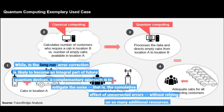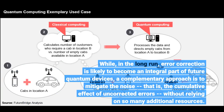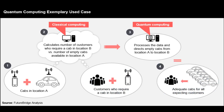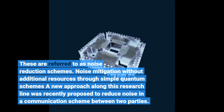While, in the long run, error correction is likely to become an integral part of future quantum devices, a complementary approach is to mitigate the noise — that is, the cumulative effect of uncorrected errors — without relying on so many additional resources. These are referred to as noise reduction schemes.